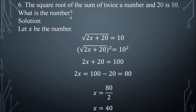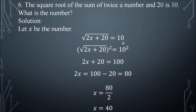Number 6. The square root of the sum of twice a number and 20 is 10. What is the number? Let x be the number. Twice a number is 2x, and the sum with 20 is (2x + 20). Taking the square root gives √(2x + 20) = 10. Square both sides to remove the radical: 2x + 20 = 100.